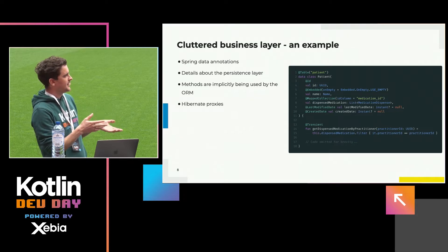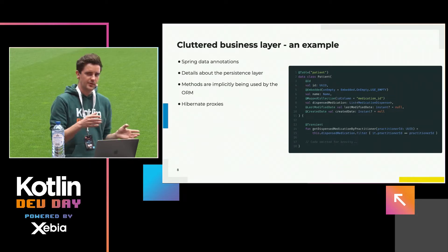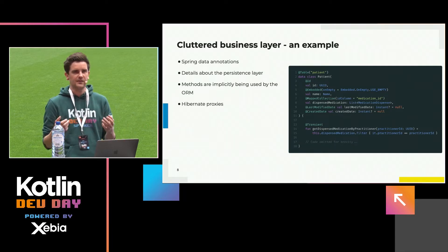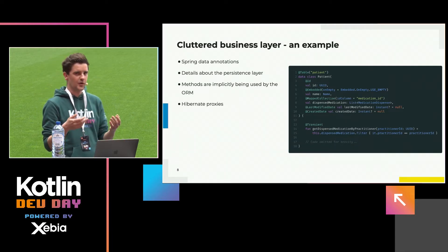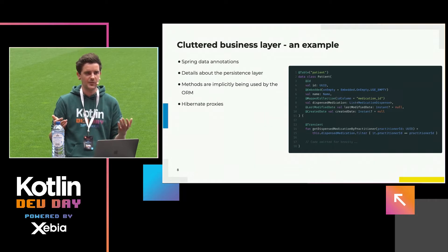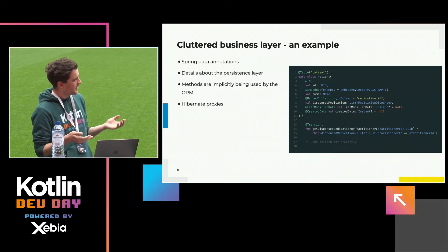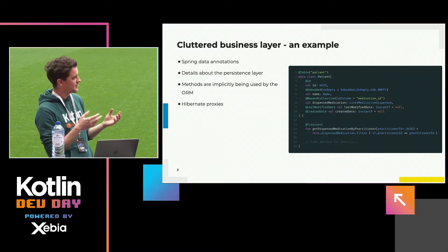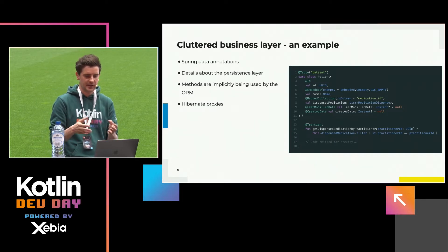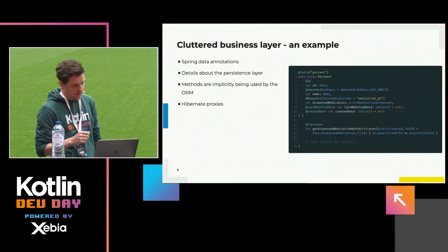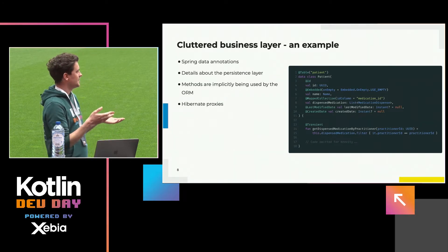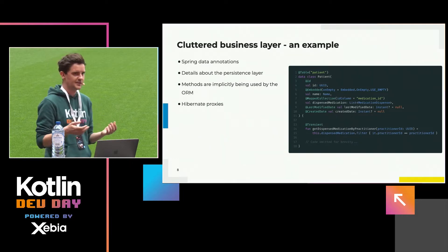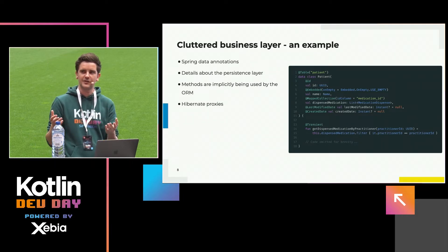Maybe now it's not a big deal because it's still manageable. But when you are adding your domain logic in this class and your ORM isn't performing anymore — so the queries have to be optimized — it gets cluttered with more information. You have to say which collections are eager, how they have to be fetched. And also there are pitfalls when using Hibernate proxies in your domain code.